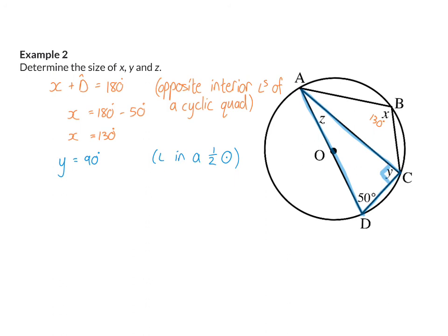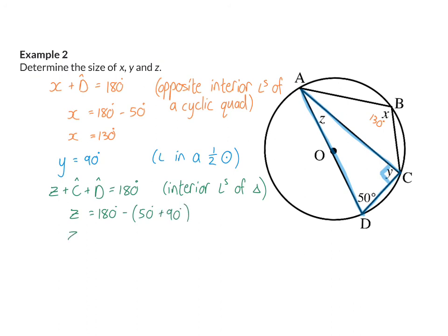To calculate angle Z, I will look at triangle ADC and calculate Z using interior angles of a triangle. So angle Z plus angle C plus angle D have to add up to 180 degrees — interior angles of a triangle. Therefore Z equals 180 degrees minus the other two angles, which are 50 and 90 degrees, meaning Z is 40 degrees.